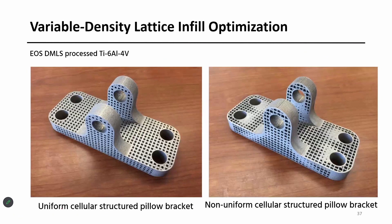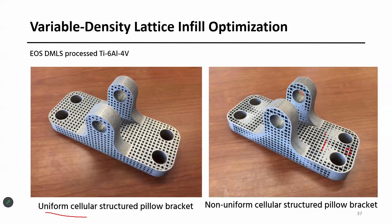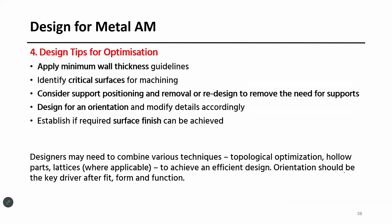The same thing here — we can see an optimized part, but it has cellular structures. It's not a fully dense part — you have more material only wherever required; other areas where you don't need more material are made with cellular structures.